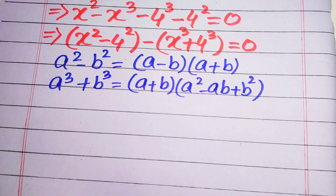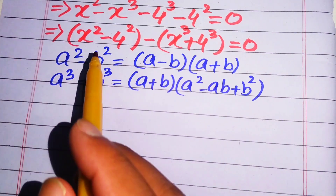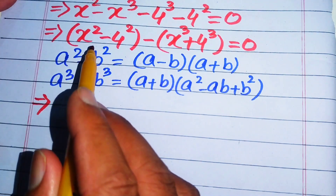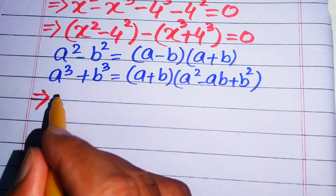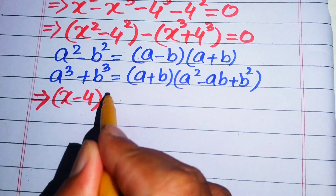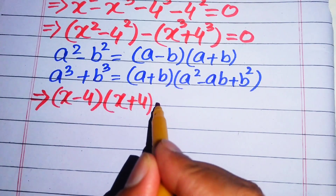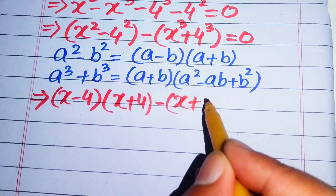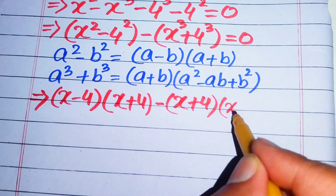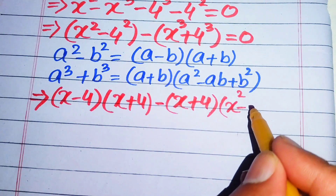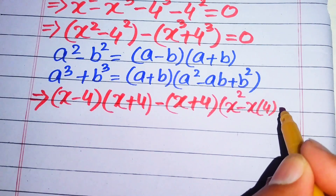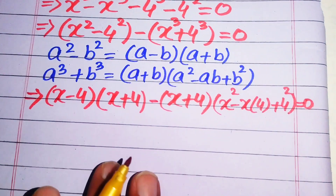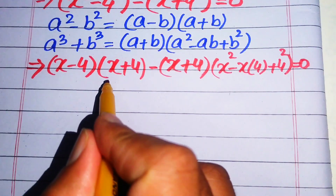Now we apply the square formula to the first term. Our first term is x squared minus 4 squared, so we write it as x minus 4 times x plus 4. Then we apply the cubic formula to the second term, so it is written as x plus 4 times x squared minus 4x plus 16. This whole equation equals zero.